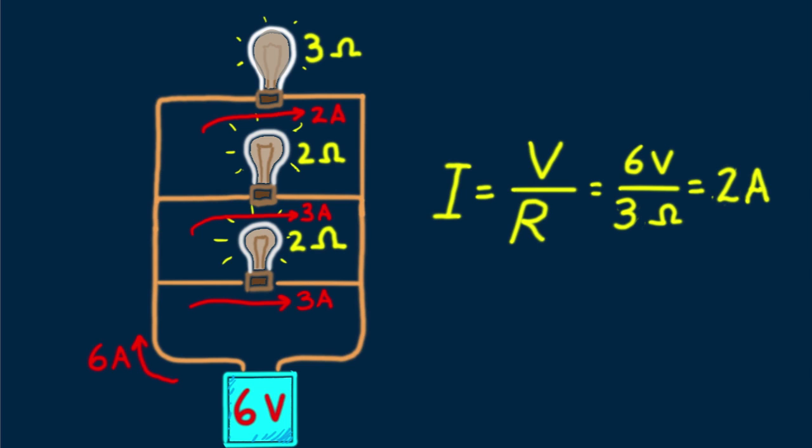So how much current does the battery supply? Well it feeds 2 amps in the top branch, 3 amps in the middle branch, 3 amps in the lower branch. Can you see it's 8 amps?